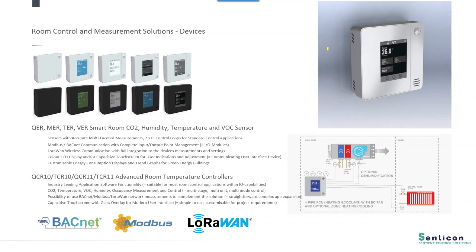The controllers can be used with a really wide variety of applications. The controller application design is very flexible and modular, and with that design it can be configured to operate with a fan coil unit controller, chilled ceilings, beams, zone controls, VAV, and so on. We'll have another video later on about the different applications and some examples of where we can use the Sendikon room controllers QRC and TCR range.